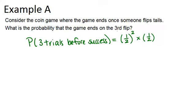So we multiply this out and we get our answer, which is 0.125. So the probability that the game ends on the third flip is 0.125.